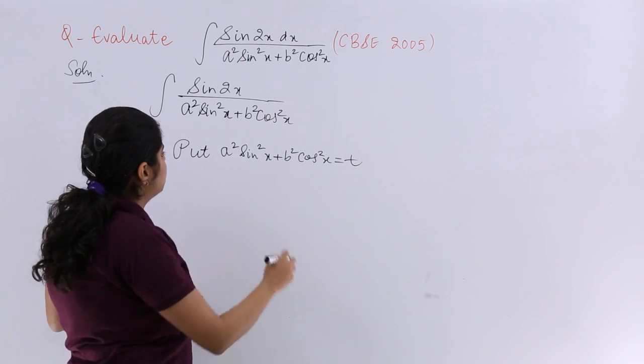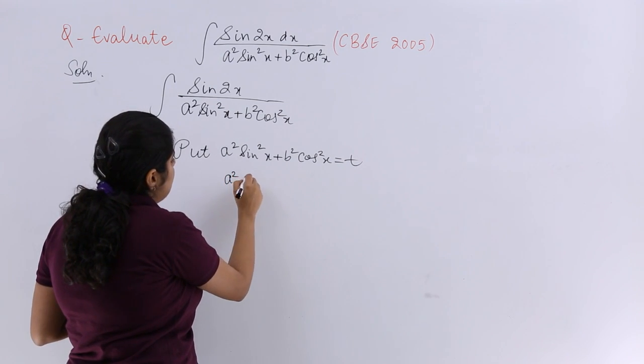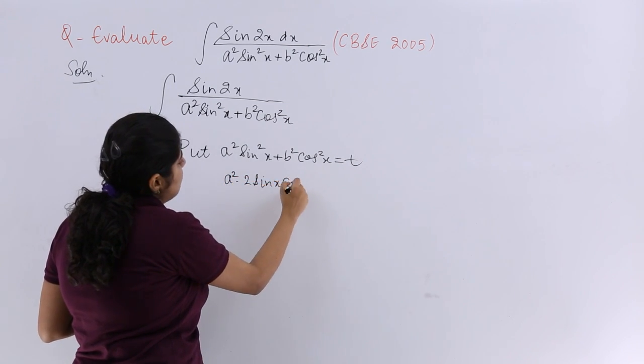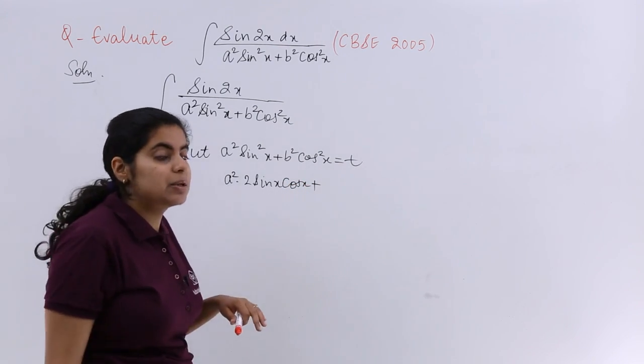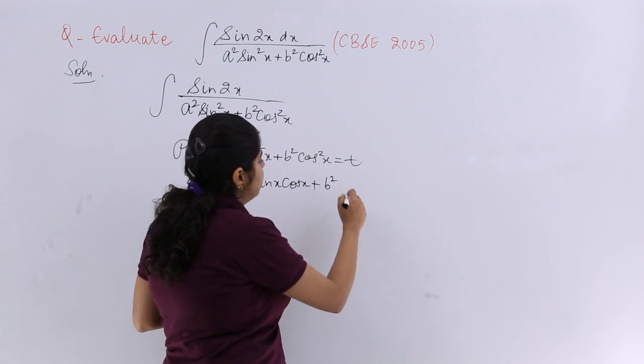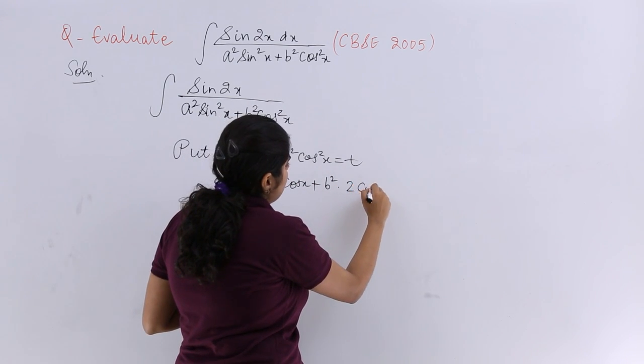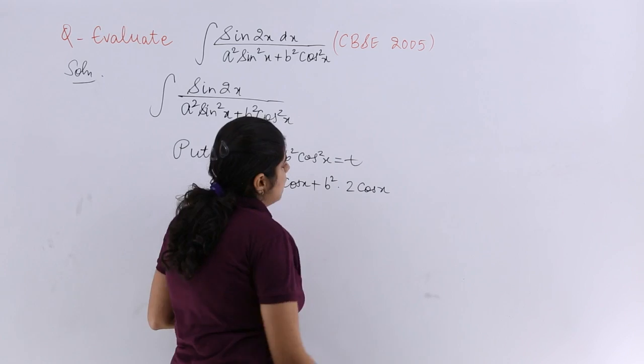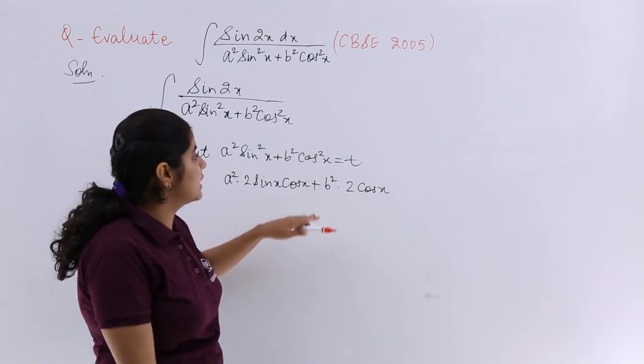Now let me find dt, let me differentiate. So a² already there, it is nothing but 2 sin x cos x, plus b² already there, and cos²x differentiation is 2 again, cos x, then cos x differentiation. Basically this is what? This is chain rule.